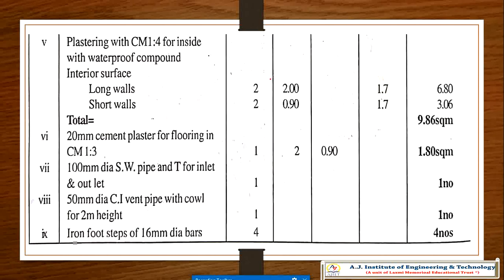There are 2 numbers of long walls, each with length 2 and height 1.7. We are not considering the thickness of plastering because it is very small and negligible. The scheduled rate is fixed as per the National Building Code for plastering in square meters. The total plastering area for long wall and short wall comes to 9.86 square meters, to which we fix the rate to get the total amount.